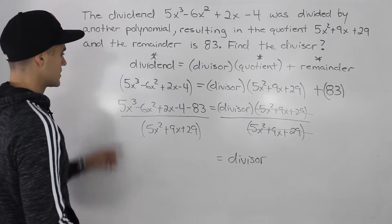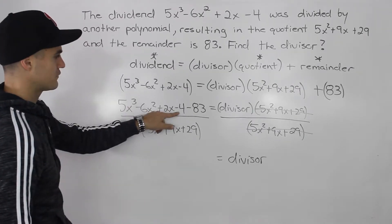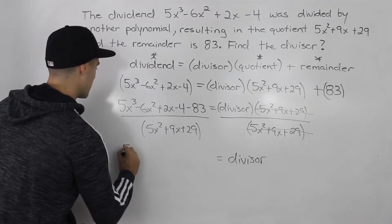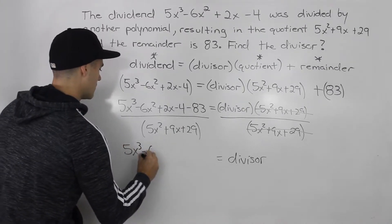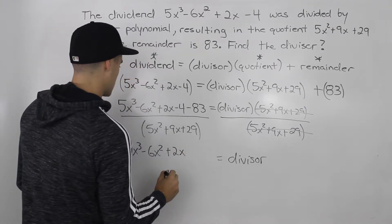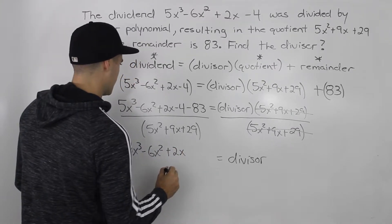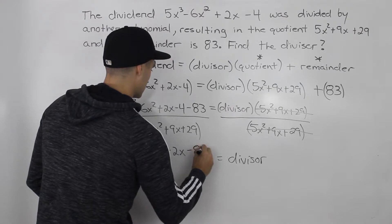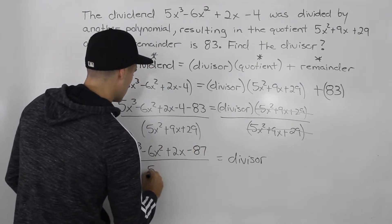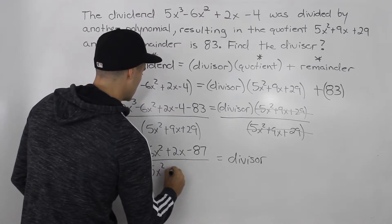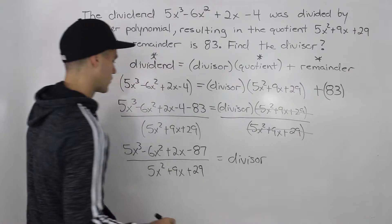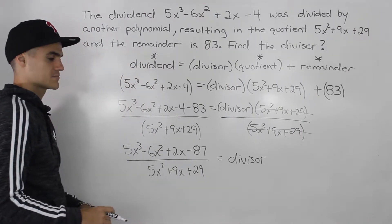And then we are just left with the divisor here on the right side. And then notice how this numerator here, we can simplify this negative 4 and this negative 83. Those are like terms. So we'd have 5x cubed minus 6x squared plus 2x minus 87. And then we are dividing still by that denominator, that new denominator on the left side that we have, which is the quotient, 5x squared plus 9x plus 29.